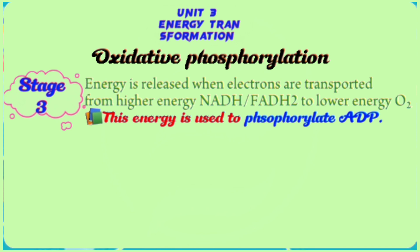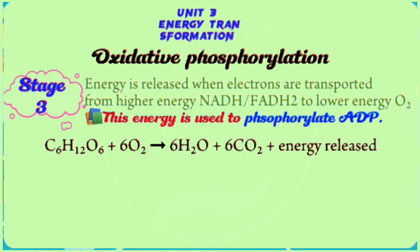The cellular respiration process — specifically aerobic respiration — can be summarized by the equation: glucose plus oxygen gives us water and carbon dioxide, and energy is released. The chemical equation is C6H12O6 plus six molecules of oxygen. The products are six molecules of H2O plus six molecules of carbon dioxide, and then ATP, or energy, is released.